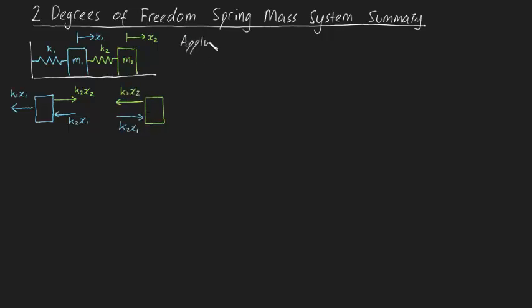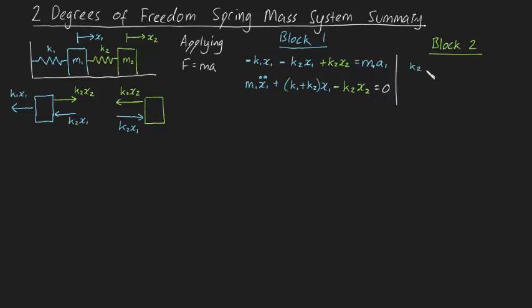Now let's generate some equations by applying F equals ma. For block 1, we have minus k1x1 minus k2x1 plus k2x2 is equal to m1a1, which can be written like this. For block 2, we have k2x1 minus k2x2 is equal to m2a2, which can be rewritten to form this.